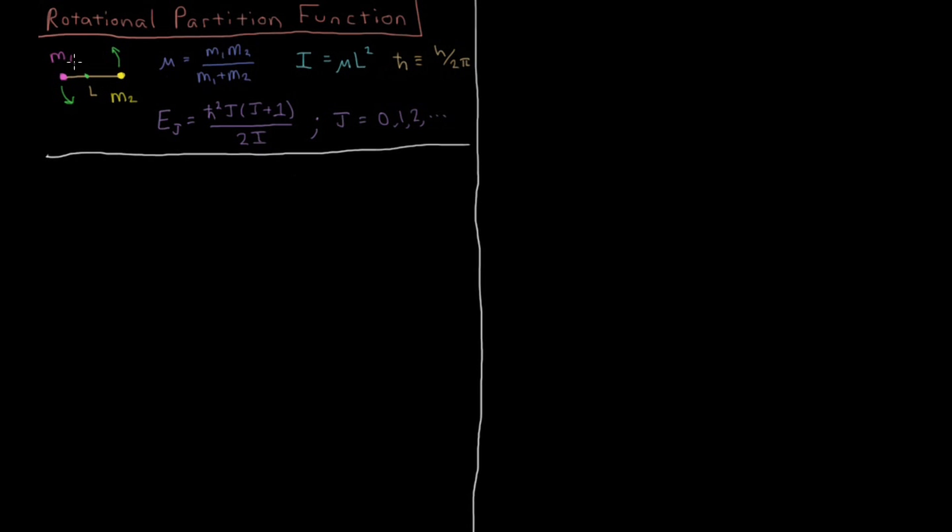The energy levels, which you get by solving the rigid rotor model for the quantum mechanical system, depend on some quantum number j. The energy is h-bar squared times j times j plus 1 over 2 times moment of inertia. The important part is that there are energy levels that depend on this integer j, starting from 0 and going up. H-bar is just Planck's constant divided by 2 pi.